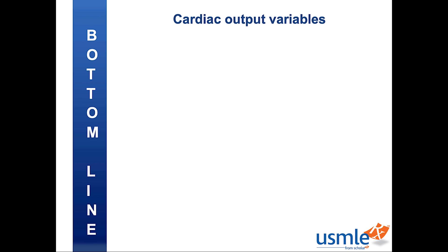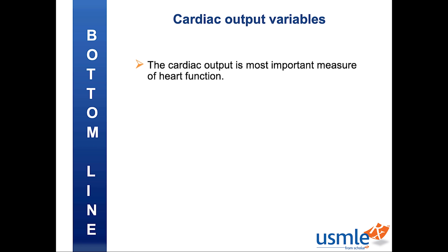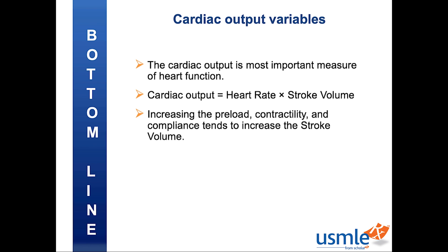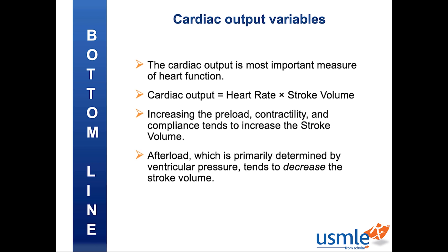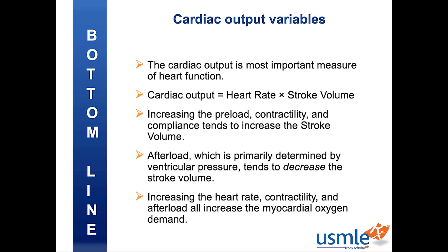Here's the bottom line: cardiac output, in terms of volume output per minute, is the most important determinant of heart function. Cardiac output equals heart rate times stroke volume. Increasing preload, contractility, and compliance tends to increase stroke volume. Afterload, which is primarily determined by ventricular pressure, tends to decrease stroke volume. And finally, increasing heart rate, contractility, and afterload all increase myocardial oxygen demand. Be sure to check out the sections on the Starling Curve and pressure-volume loop for a closer look at how preload, afterload, and contractility all relate to stroke volume. Take care of yourself, friends — the fun's only just begun.